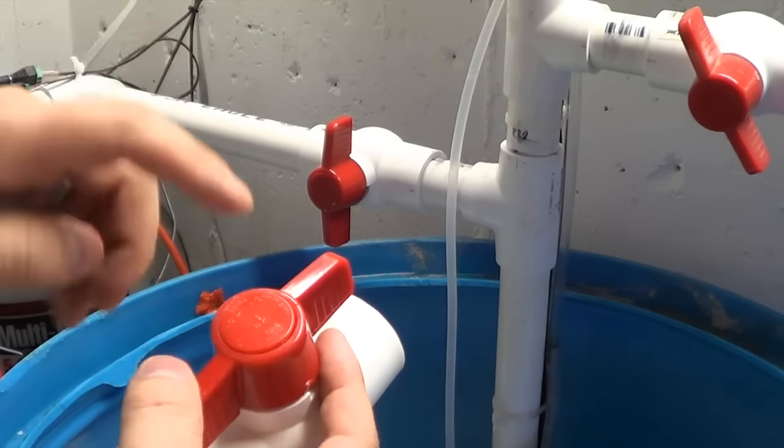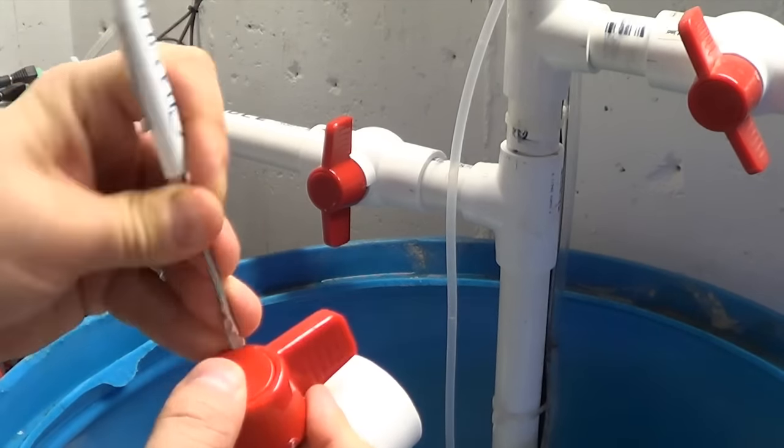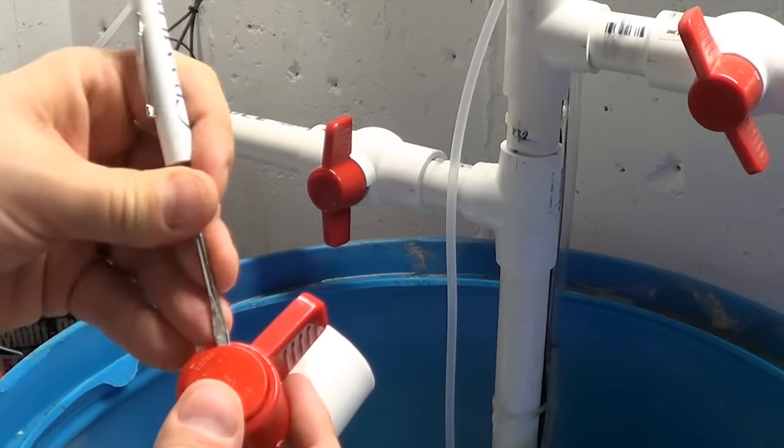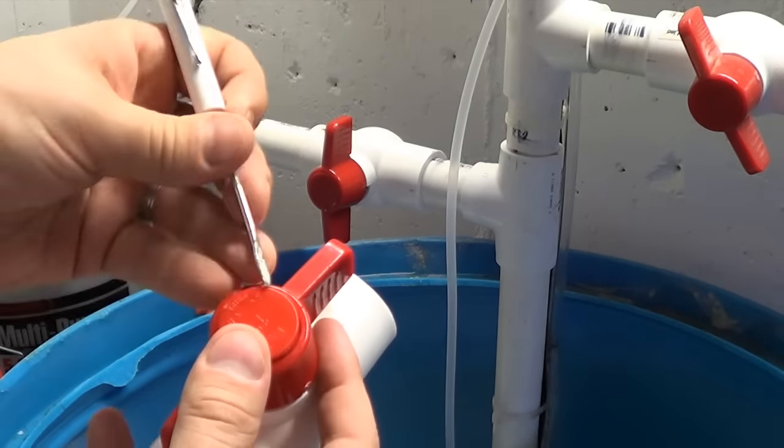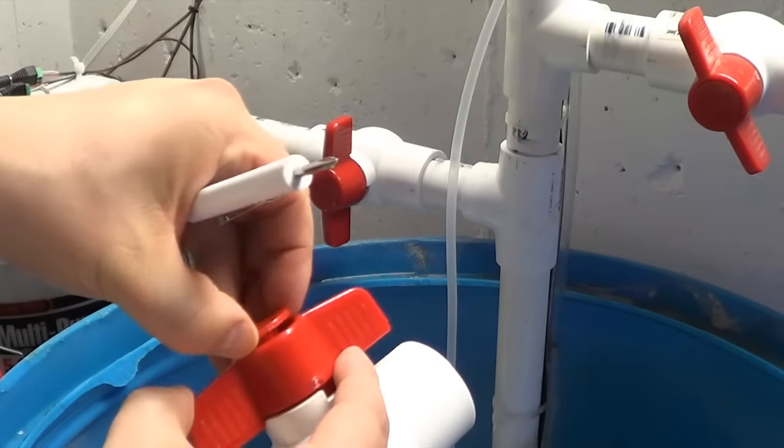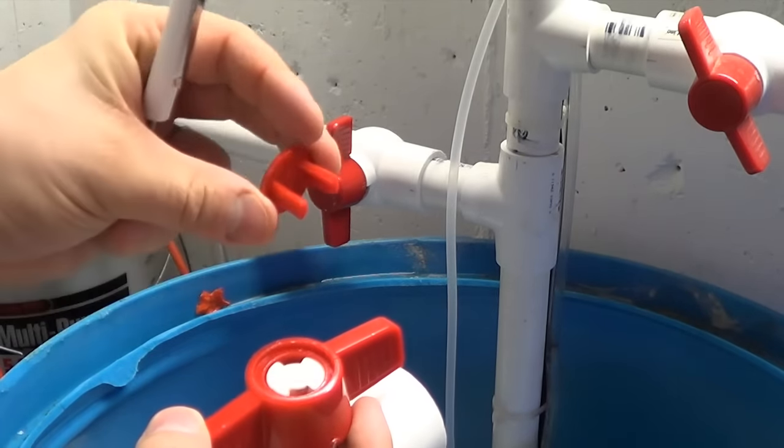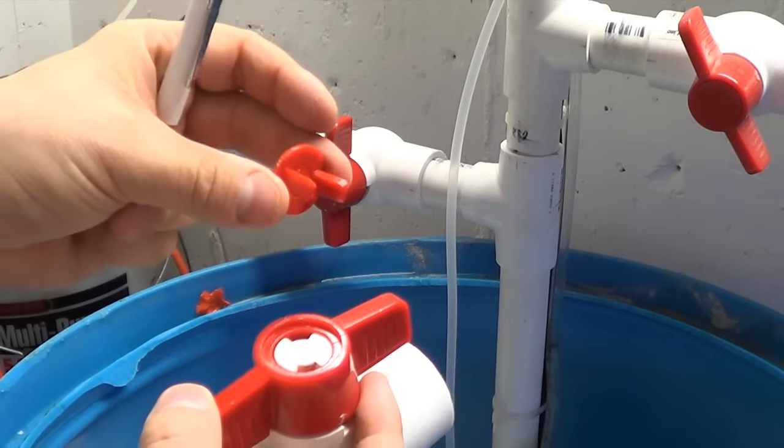So this is the Mueller brand, this is the one you typically find at Home Depot. It's a pretty cheap ball valve. To get into it all you need to do is take a small flathead screwdriver and just wedge it in there until this cap pops off. Now it's important that you keep this cap in one piece because you're going to need it when you're done.